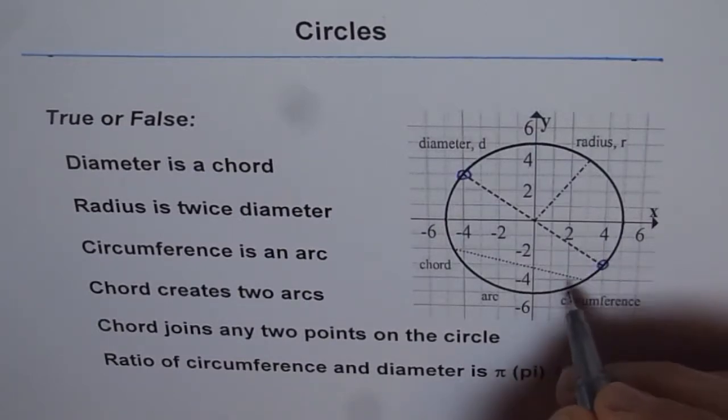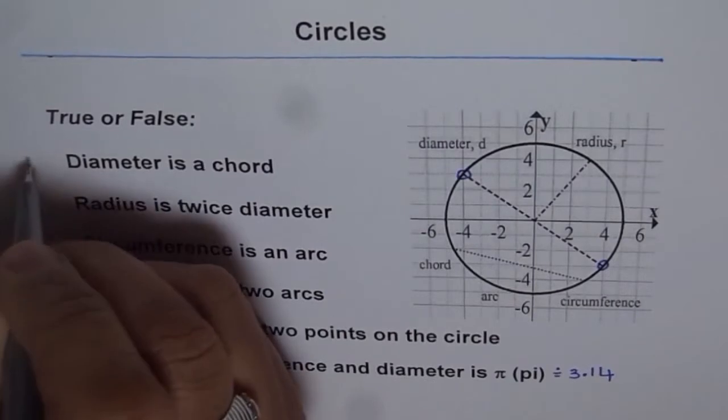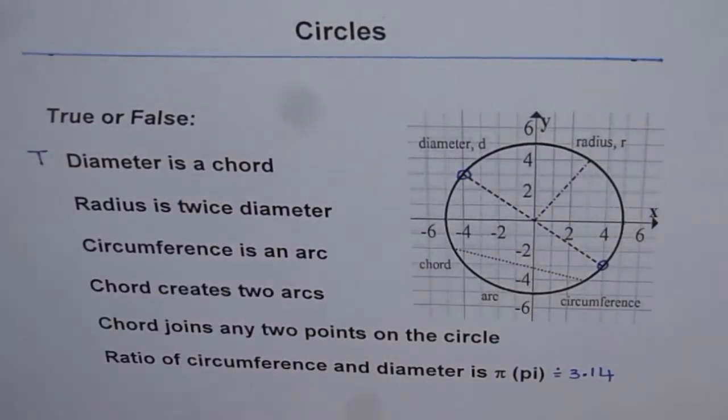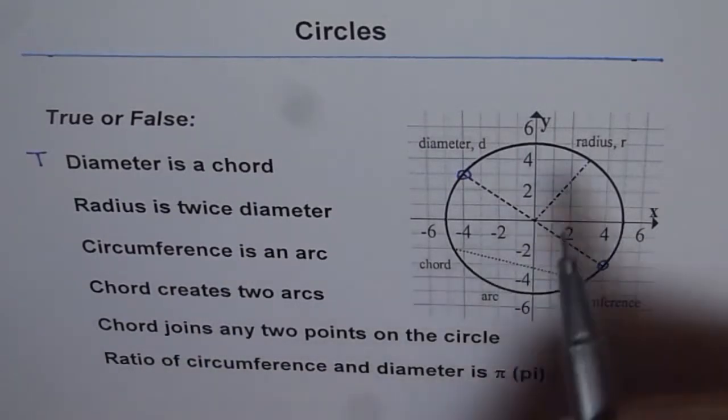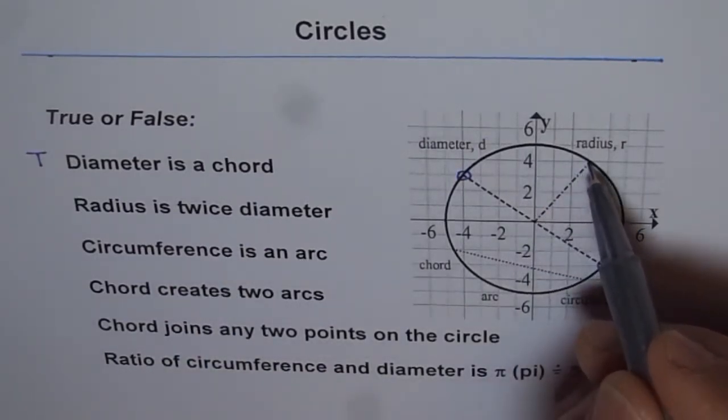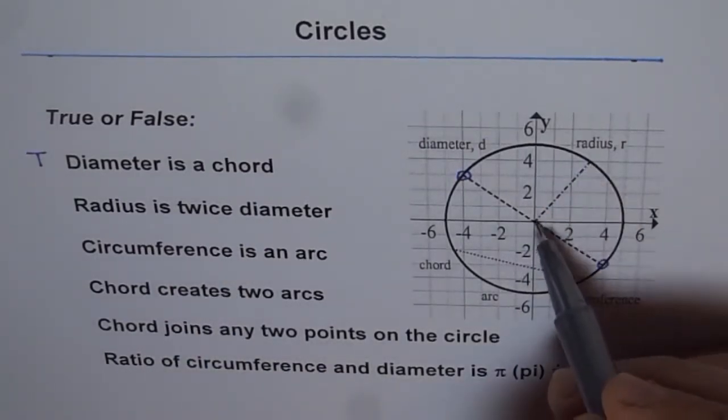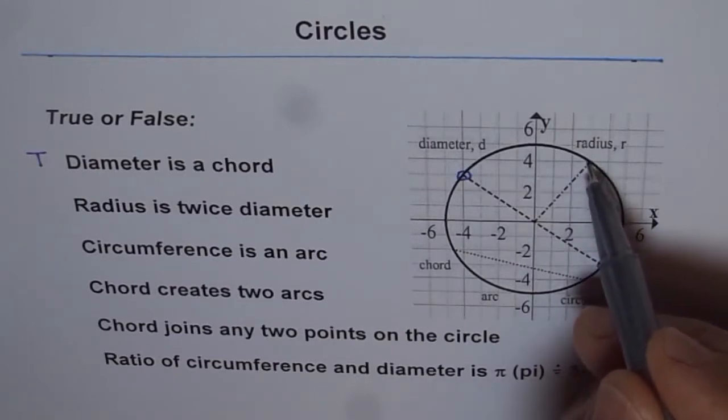Next one, the radius is twice the diameter. Now the radius is just half of the diameter. Radius is from center to the circumference, whereas the diameter is twice it. It goes to the other end also. So this is false.